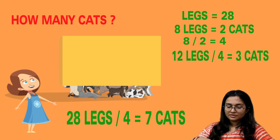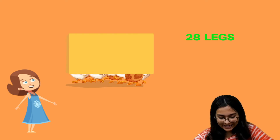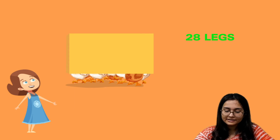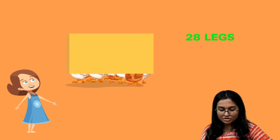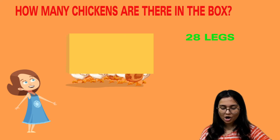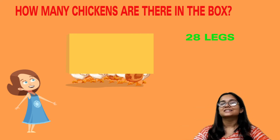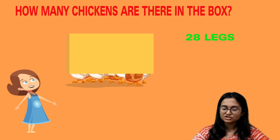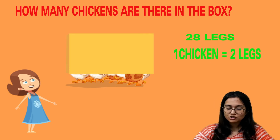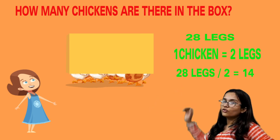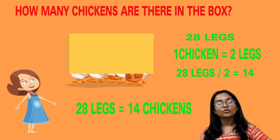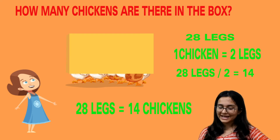Now Bilho kept her chickens in a box and counted 28 legs. The question is: how many chickens are there? In the case of cats, each cat had 4 legs. But a chicken only has 2 legs. So if there are 28 legs, we divide by 2, and the answer is 14. There will be 14 chickens.